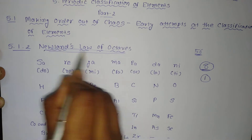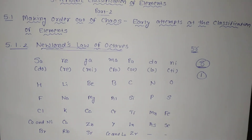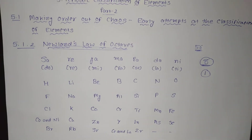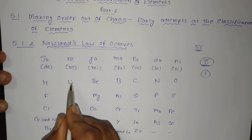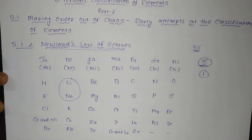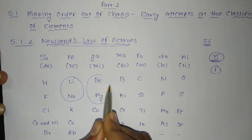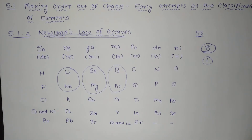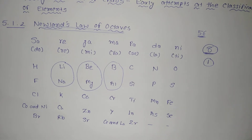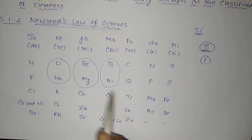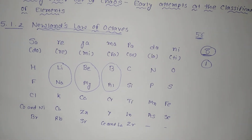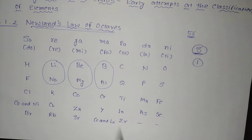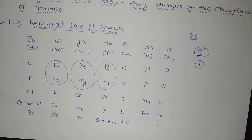In Newland's octaves, the properties of lithium and sodium were found to be the same. Similarly, beryllium and magnesium had the same property, boron and aluminium had the same property, and carbon and silicon as well. He arranged elements in increasing order of atomic masses, and every 8th element had the property similar to the first one. A part of the original Newland's octave table is shown here.